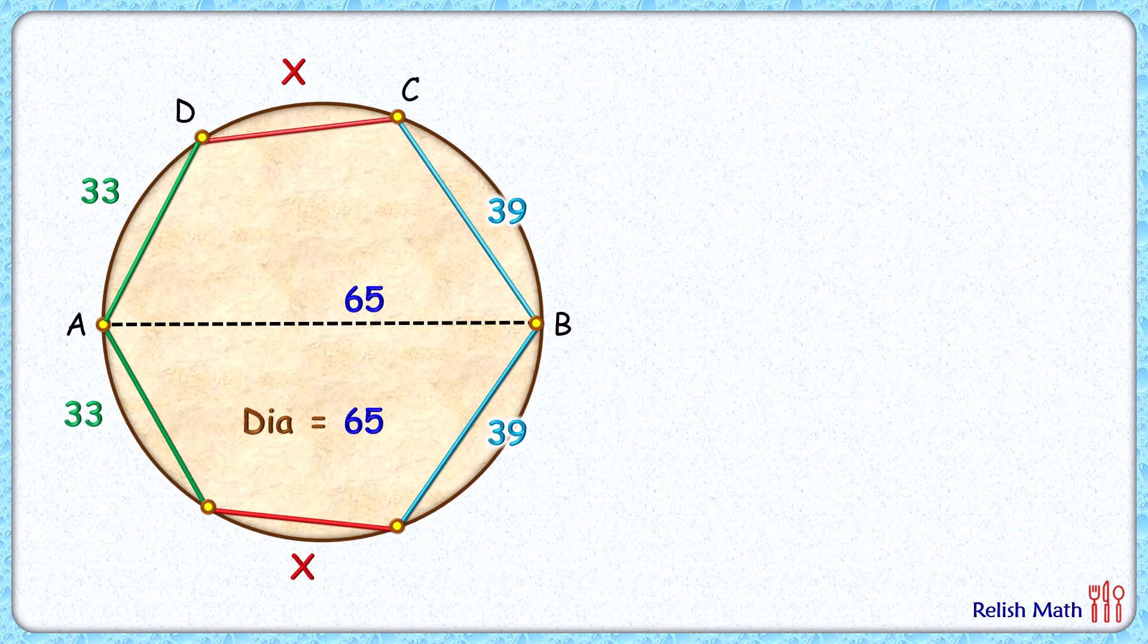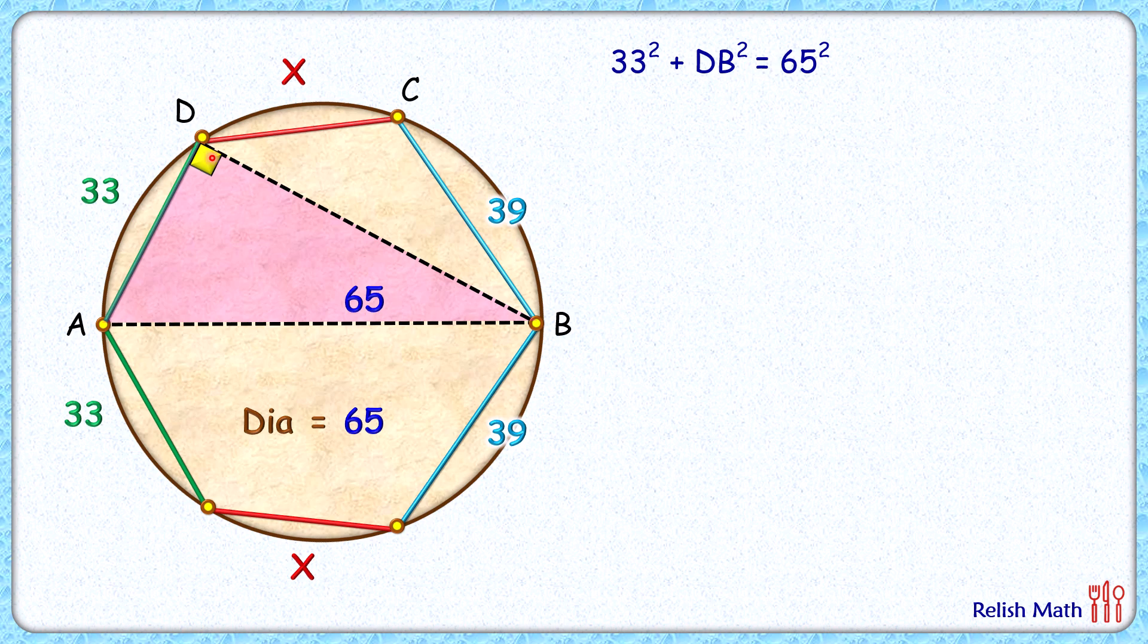Let's start by joining DB here. AB is the diameter, thus angle D is 90 degrees. In this pink triangle applying Pythagorean theorem and solving it will get your DB length as 56 centimeters.